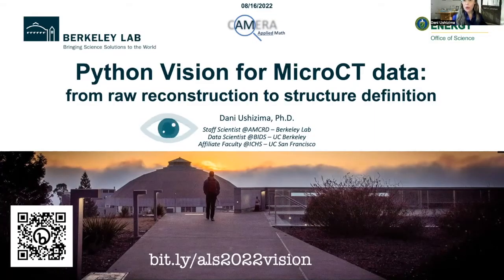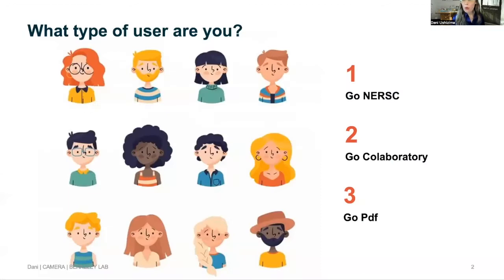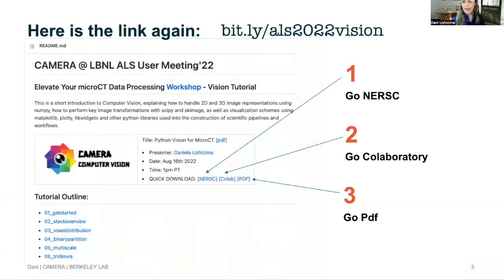Let's get started. To do so, just type this link or use the QR code here on the left side to have access to the Jupyter Notebooks and data that will be used during this tutorial. But what type of user are you? If you have the time to create a NERSC account, then you're going to follow instructions for number one. If you didn't have that chance, no problem. You can follow along using Google Collaboratories.